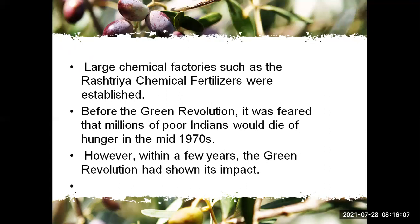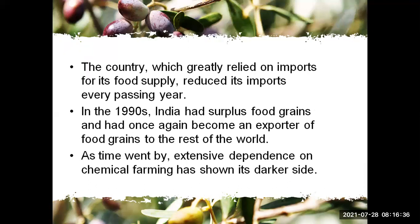Before the Green Revolution, poor Indians were afraid they would die of hunger. It was clear that millions of poor Indians faced hunger in the mid-1970s. However, within a few years, the Green Revolution showed its impact. The country, which had greatly relied on imports for its food supply, reduced imports every passing year. By the 1990s, India had a surplus of food grain and had once again become an exporter of food grain to the rest of the world.